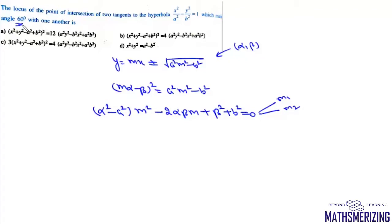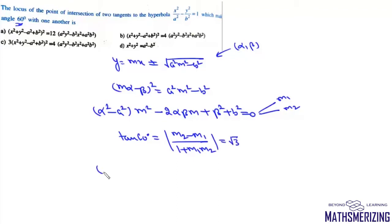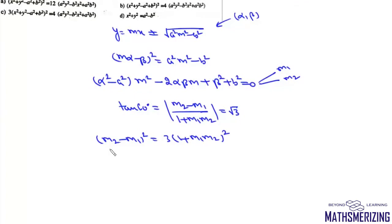Since the angle between the tangents is 60°, tan(60°) = (m₂ - m₁)/(1 + m₁m₂) = √3. Squaring both sides: (m₂ - m₁)² = 3(1 + m₁m₂)². We rewrite (m₂ - m₁)² as (m₁ + m₂)² - 4m₁m₂, giving (m₁+m₂)² - 4m₁m₂ = 3(1 + m₁m₂)².